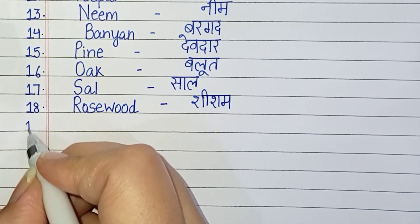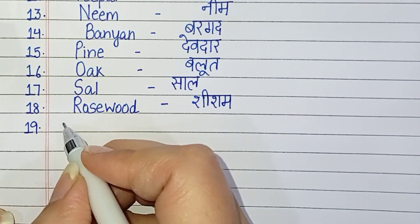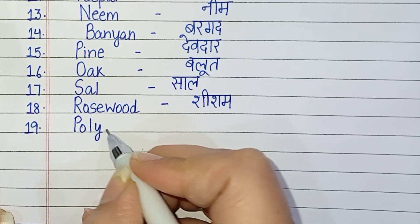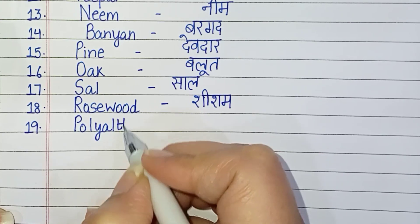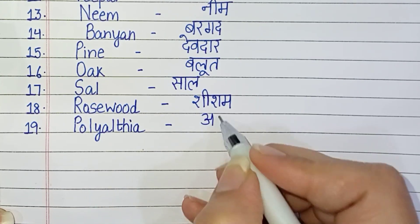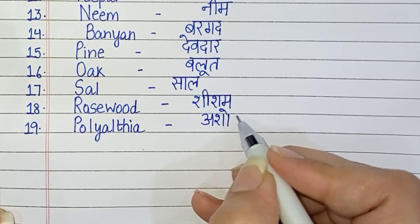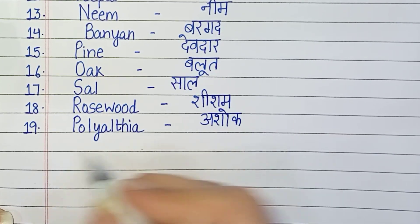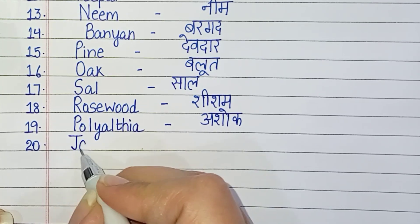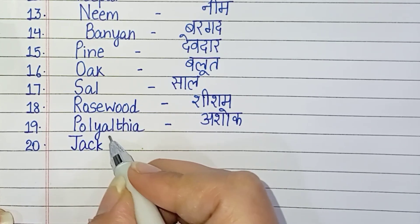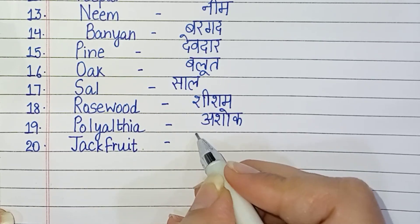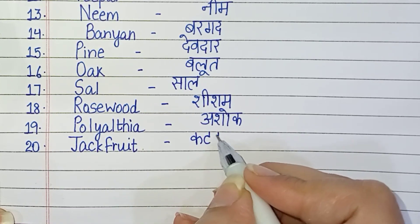Number nineteen: P-O-L-Y-A-L-T-H-I-A, polyalthea, means Ashok. Number twenty: J-A-C-K-F-R-U-I-T, jackfruit, means kathal.